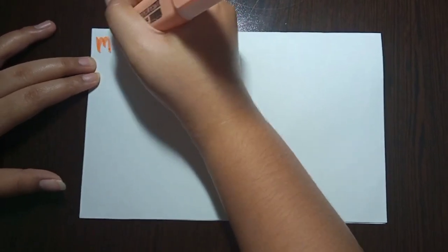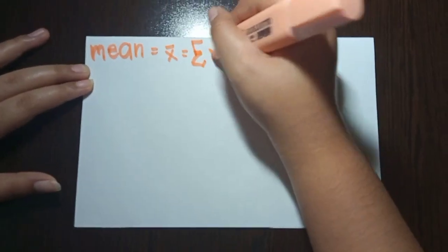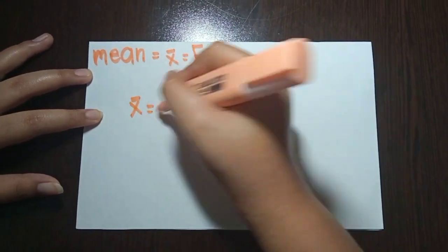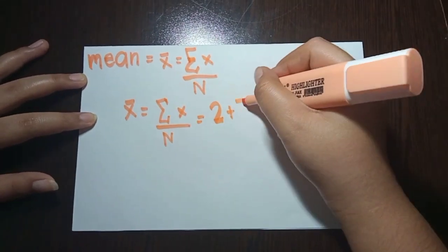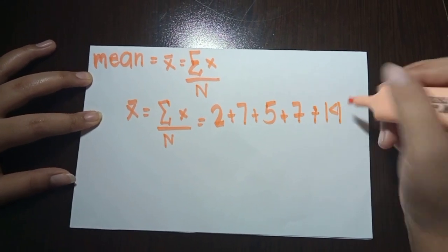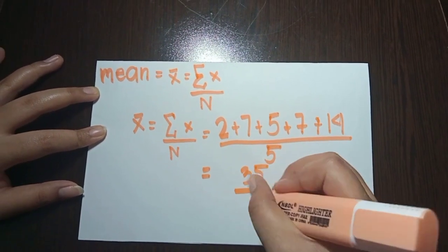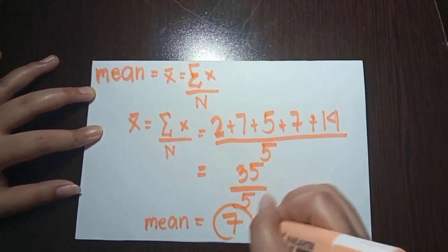This is the first set of data and we need to determine its mean, median, and mode. First, we will determine the mean. For the mean, we are going to use the formula of summation of x over n — we add all the values over the number of values. So, 2 plus 7 plus 5 plus 7 plus 14 is divided by 5 because there are 5 values. That gives us 35 over 5, which equals 7. Therefore, the mean is 7.